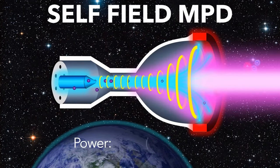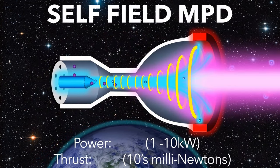Let's now see how they work, starting with the lower thrust, self-field MPD thruster.